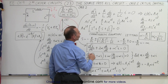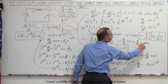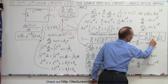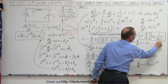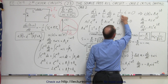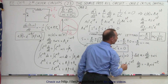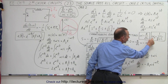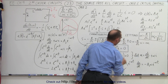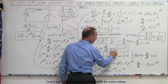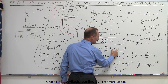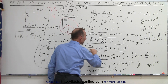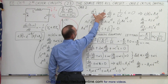And notice that 1 over LC is equal to omega squared, since omega equals 1 over the square root of LC. So 1 over LC is omega squared, and since omega equals alpha — the natural frequency equals the damping factor — instead of writing omega sub-naught squared, we can write alpha squared, and now we have a new differential equation.